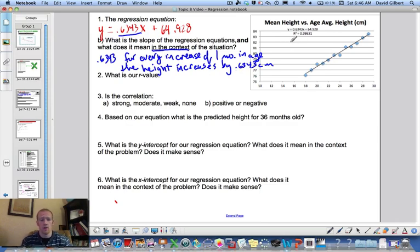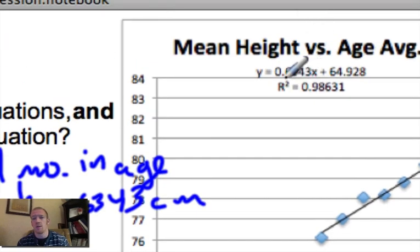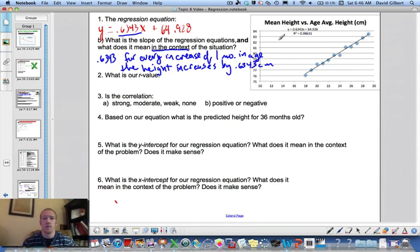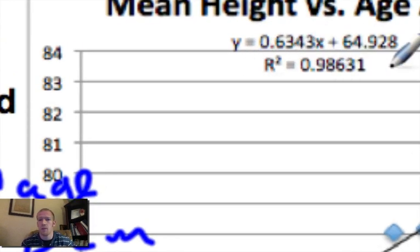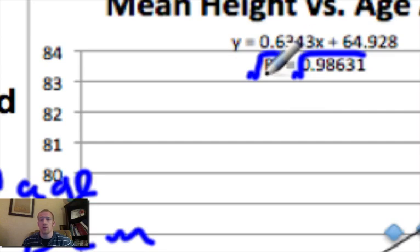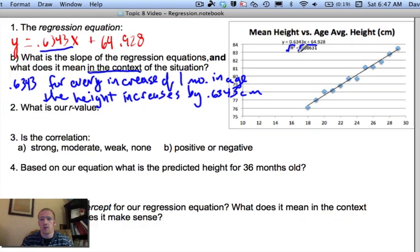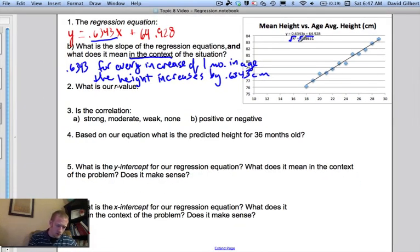Our r value. Now I want you to notice right here, this gives us r squared. That's because we can use r squared for any type of model. But for linear, it's actually better to look at r. So what we're going to do is, since r squared is this number, what we need to do is take the square root. We have to unsquare it. Since we want r, we don't want r squared, we've got to unsquare it, which means taking the square root. So I'm going to do that on my calculator right now. Square root of 0.98631, and that gives me 0.9931.